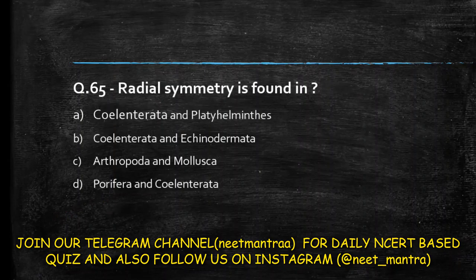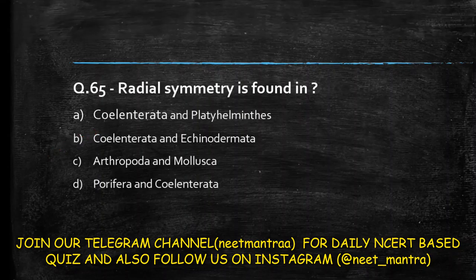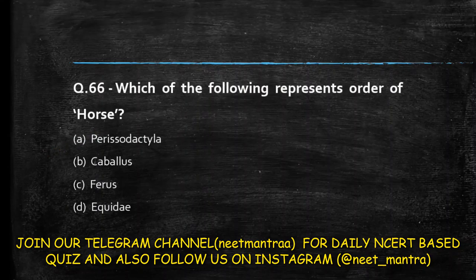Next question: radial symmetry is found in — Coelentrata and Platyhelminthes; Coelentrata and Echinodermata; Arthropoda and Mollusca; Porifera and Coelentrata? Radial symmetry is found in Coelentrata and Echinodermata. So the answer is option B.